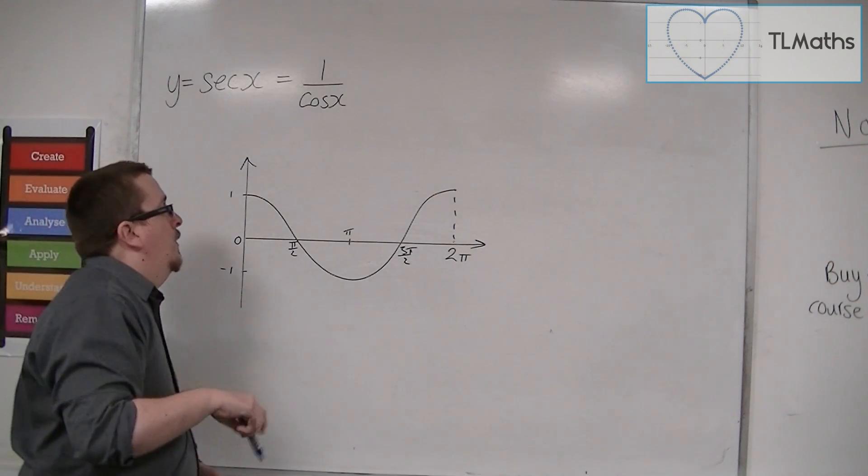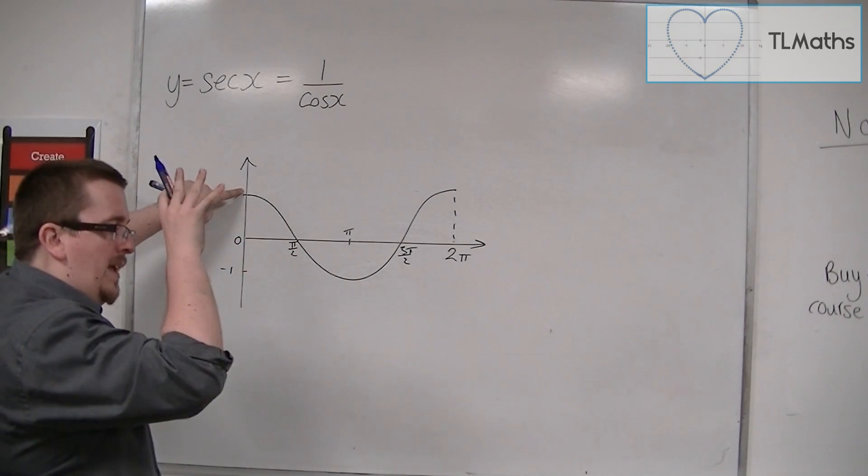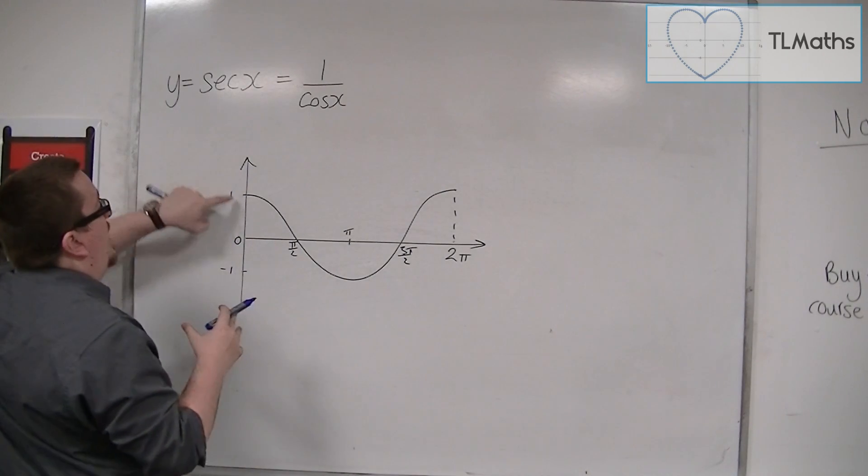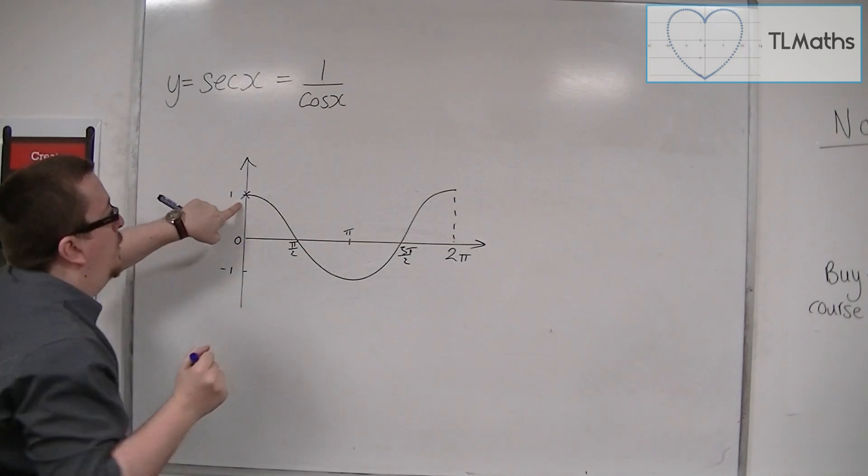So when cosine is 0, well sorry, when we have cos of 0, then we get 1. So we have 1 over 1, and so the curve must go through that point.